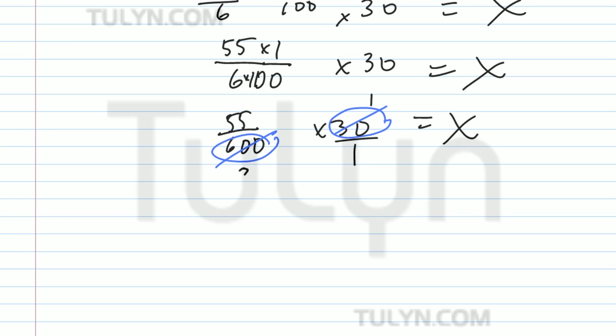600 divided by 30 is 20, so it's going to be 55 over 20 equals x. So what goes into 55 and 20 is 5, so reduce both by greatest common factor of 5. It's going to be 11 over 4 equals x.